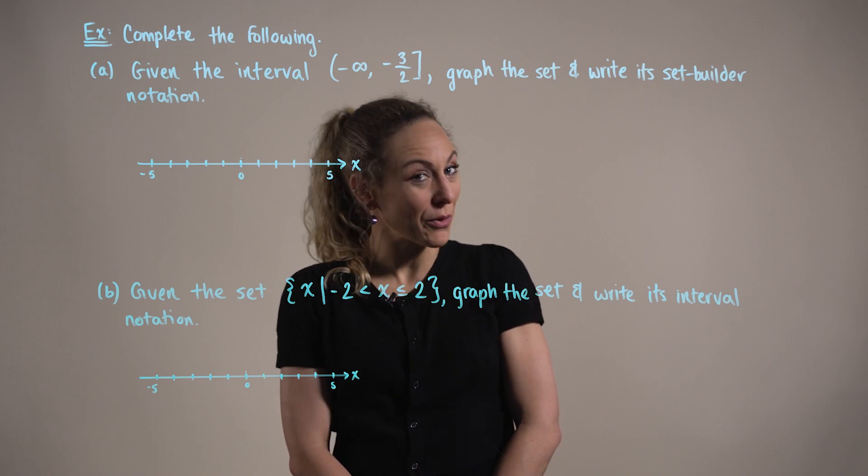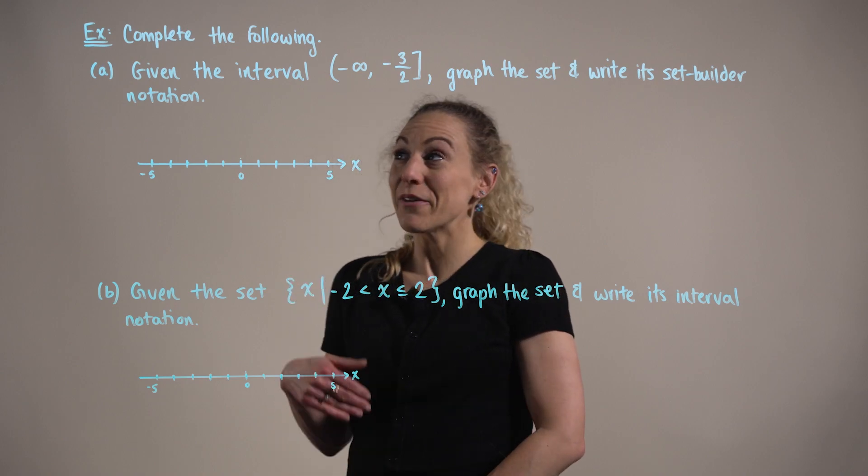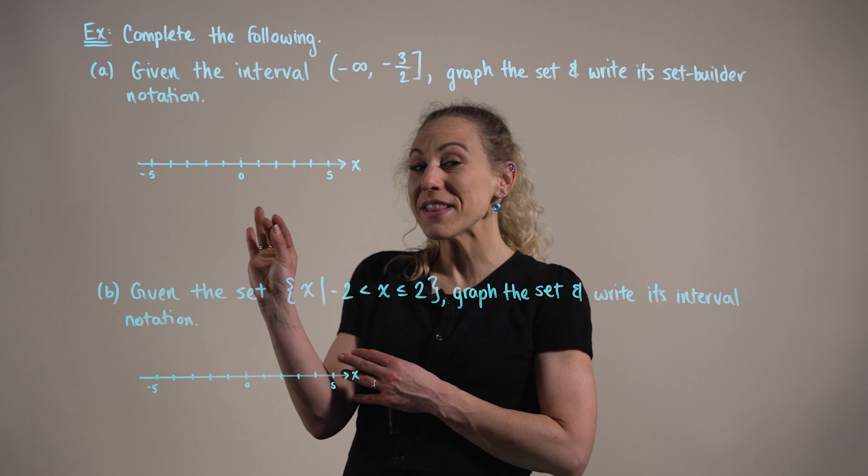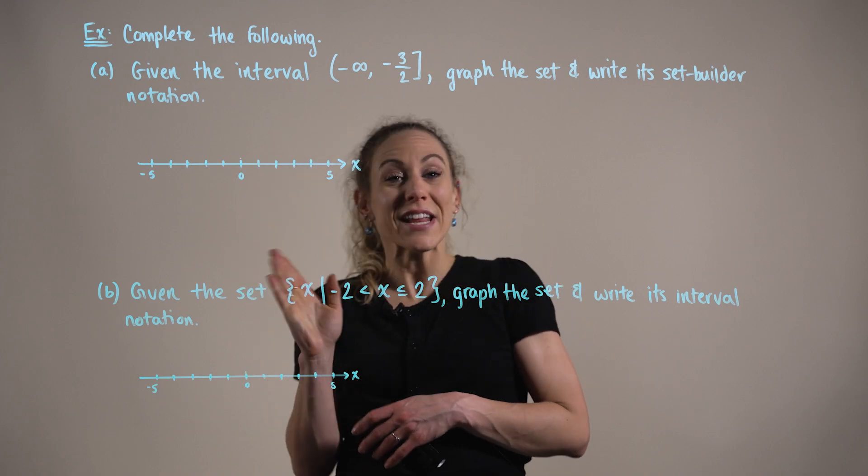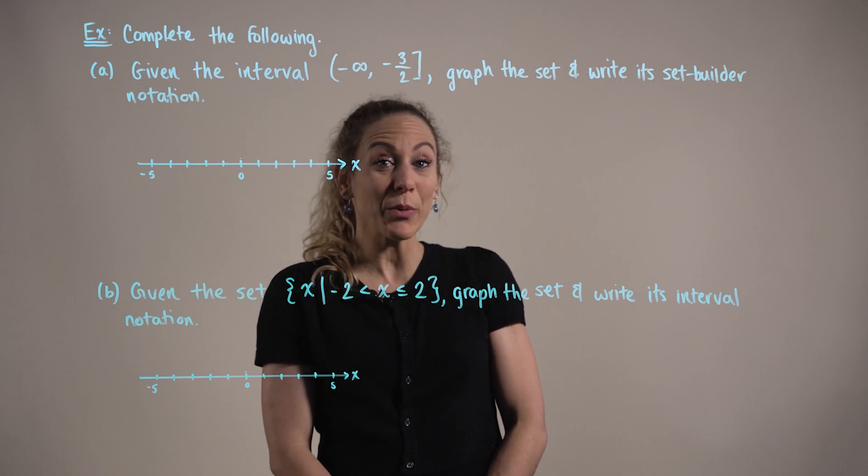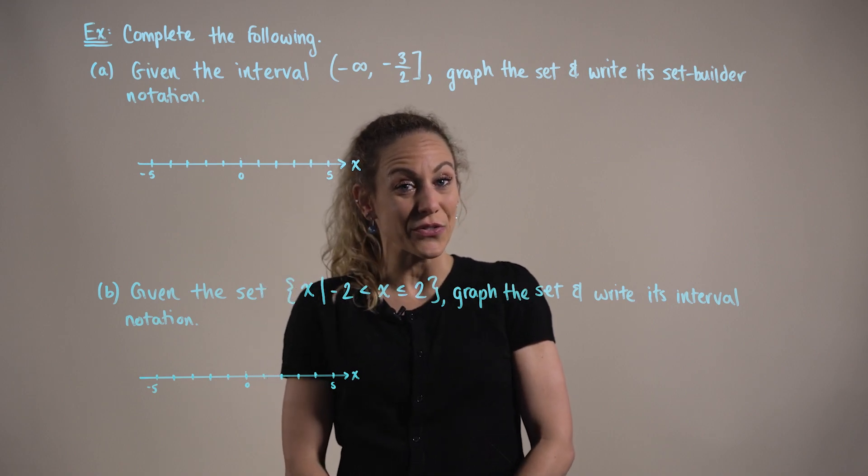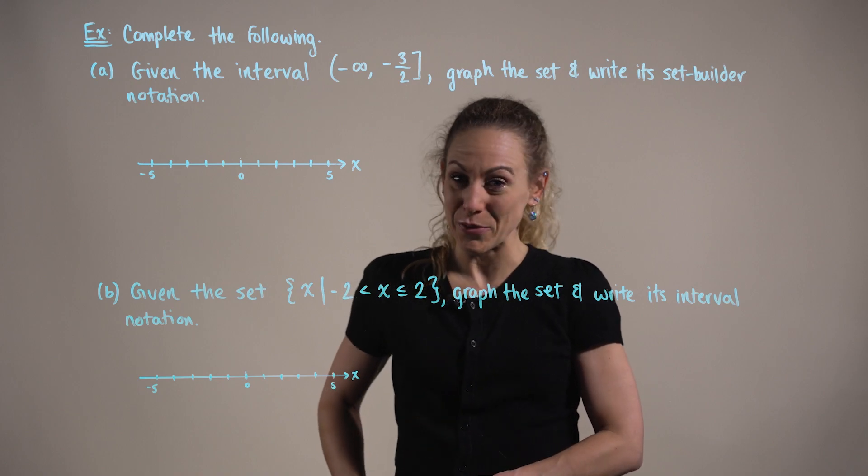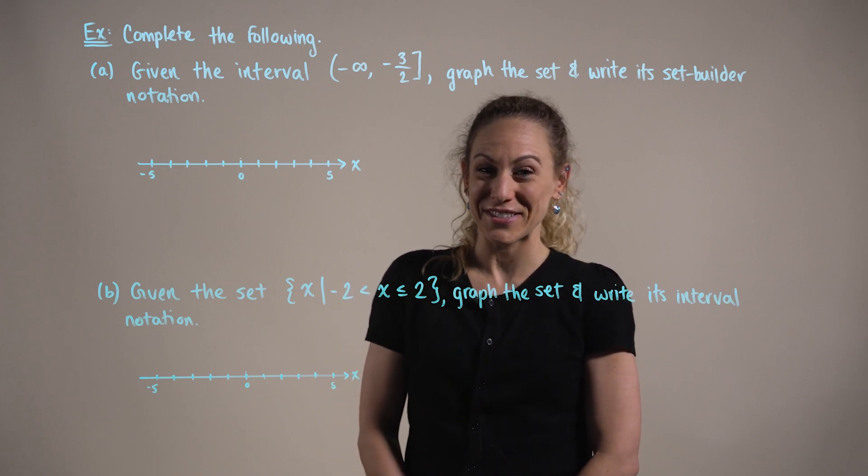In this example, we are asked to complete the following. Now in part A, we are given the interval negative infinity up to and including negative three halves and we're being asked to graph this interval and then to write the interval in its set notation or set builder notation.